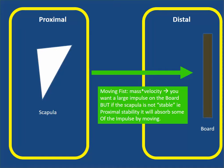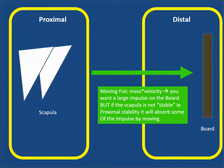However, you do not want the proximal part of your body — for example, the scapula during a punch — to move. You want all the momentum going forward into your fist to break that board. The fist has mass times velocity; you want a large impulse on the board. That's why they always talk about punching through the board, so you don't have some reflexive slowing down. But if the scapula is not stable, it will move and absorb some of that impulse. If it moves posteriorly, that takes away momentum that should be applied to the board.